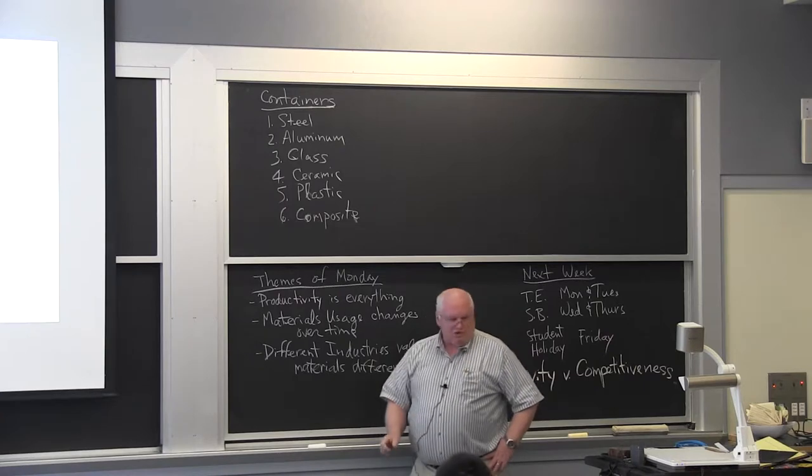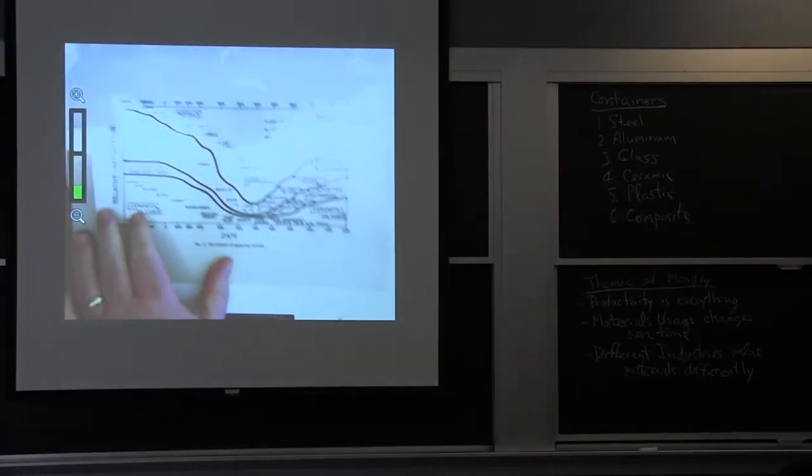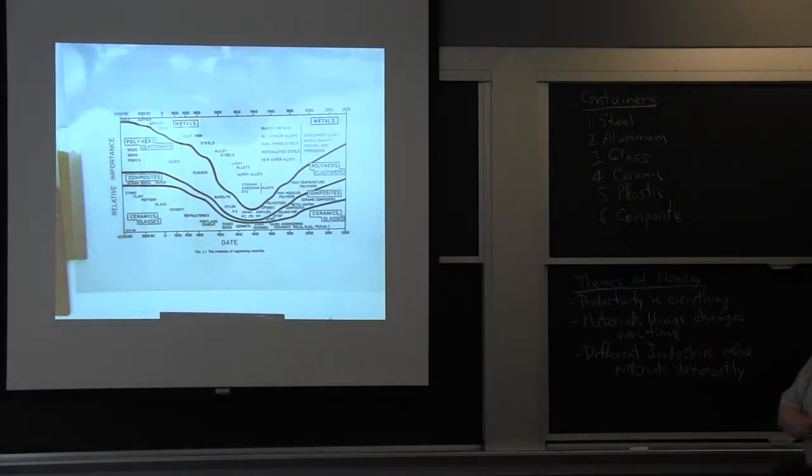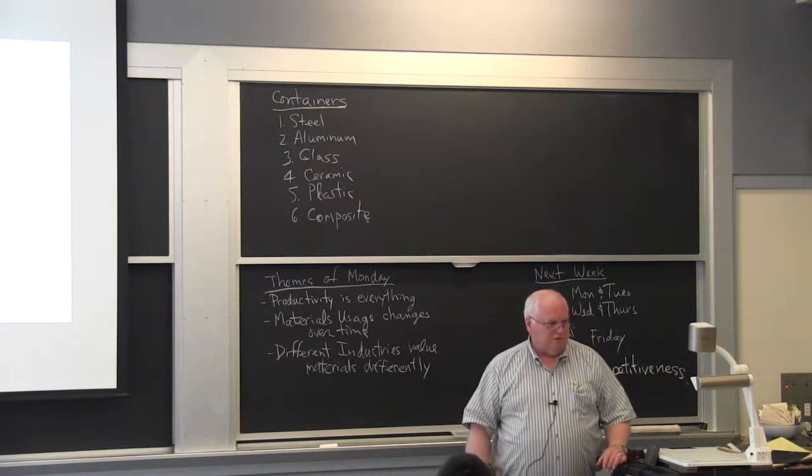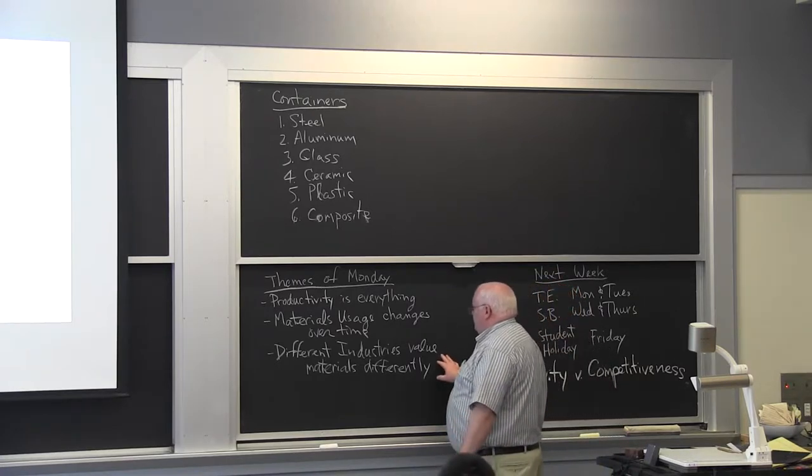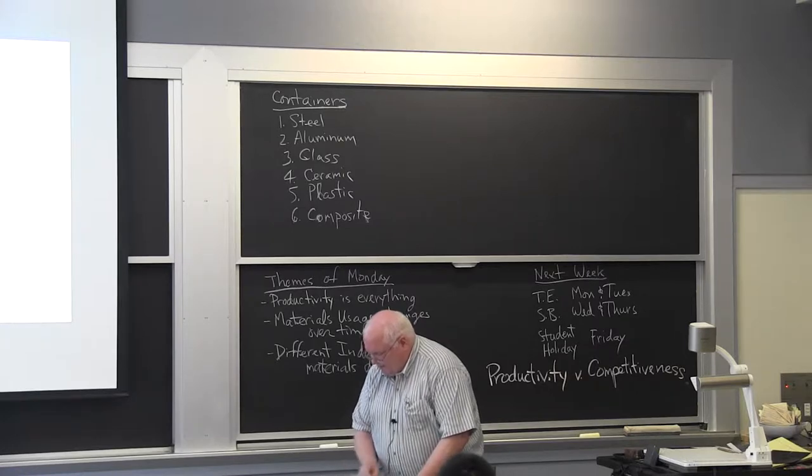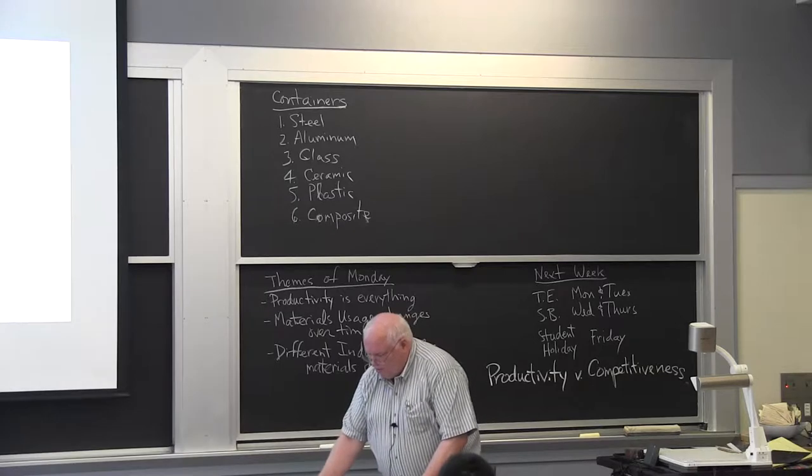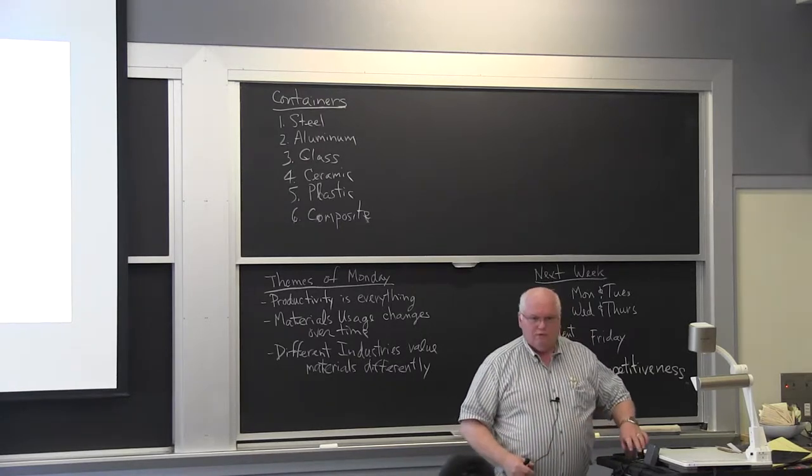And we talked about steel went from one person year per ton to about 20 minutes. Or three tons per person hour. Materials usage changes over time. I gave you the Ashby plot. We actually handed it out. He goes back to 10,000 BC all the way up to 2020. He did all this kind in the near midpoint here. This came out of a book in the 1980s and he turns out to have been terribly wrong going forward. But prediction is very difficult, especially if it involves the future.